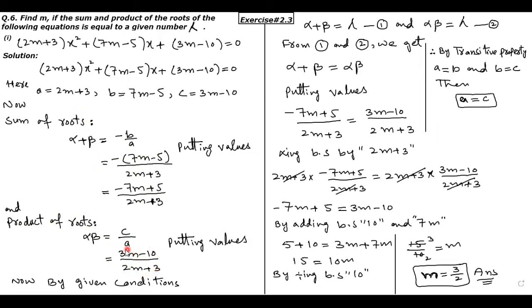Ab hum asli question ko hal karne ki taraf aate hain jisme hum condition use karenge aur condition ko use karte hue hum 'm' ki value find out karenge. Given condition ke mutabiq jo sum of roots tha aur product of roots tha, woh ek given number ke barabar the — aur woh number lambda tha. Sum of roots bhi lambda ke barabar tha aur product of roots bhi lambda ke barabar tha, toh by transitive property yeh dono aapas mein equal ho jayenge.